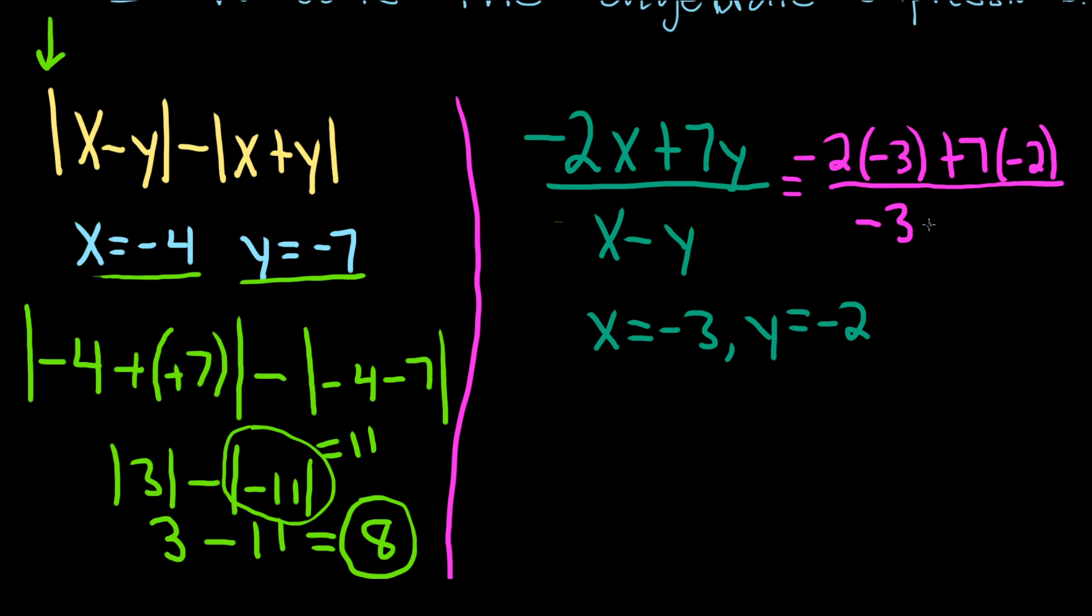So negative 3 minus, and then y is negative 2, right? Wow. What a mess.